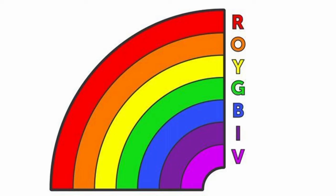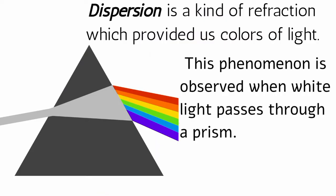We highlight here the arrangement of colors of light as ROYGBIV, when dispersion happens. Dispersion is a kind of refraction which provides us colors of light. This phenomenon is observed when white light passes through a prism.